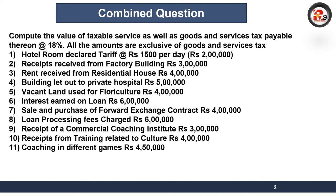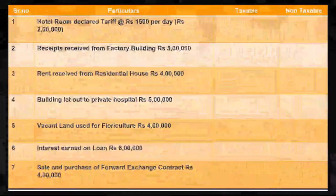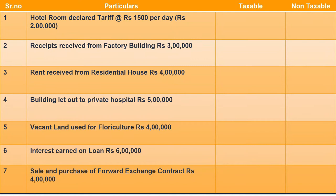Point number 1: hotel room declared a tariff at ₹1,500. We learned that if the tariff is more than ₹1,000, the entire amount becomes taxable, and if the tariff is less than ₹1,000, it will be non-taxable. This is from the part of immovable property. Point 2: receipts received from factory building — again it is a commercial activity, so ₹3,00,000 will be taxable.